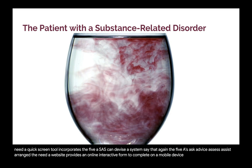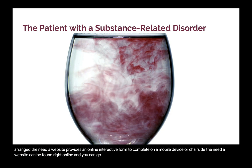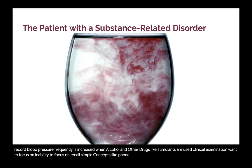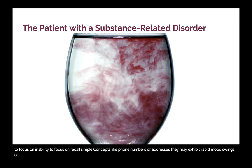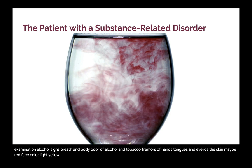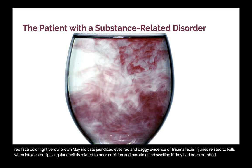Vital signs: record information in the patient record; blood pressure is frequently increased when alcohol and other drugs such as stimulants are used. Clinical examination: focus on the patient's inability to recall simple concepts like phone numbers or addresses, rapid mood swings, paranoia or disorientation, and complaints about dental pain requesting a prescription for specific pain medications. Extra-oral examination — alcohol signs: breath and body odor of alcohol and tobacco; tremors of hands, tongue, and eyelids; skin may be red; face color light yellow-brown may indicate jaundice; eyes red and baggy; evidence of trauma and facial injuries related to falls when intoxicated; lips — angular cheilitis related to poor nutrition; parotid gland swelling if the patient has been vomiting.